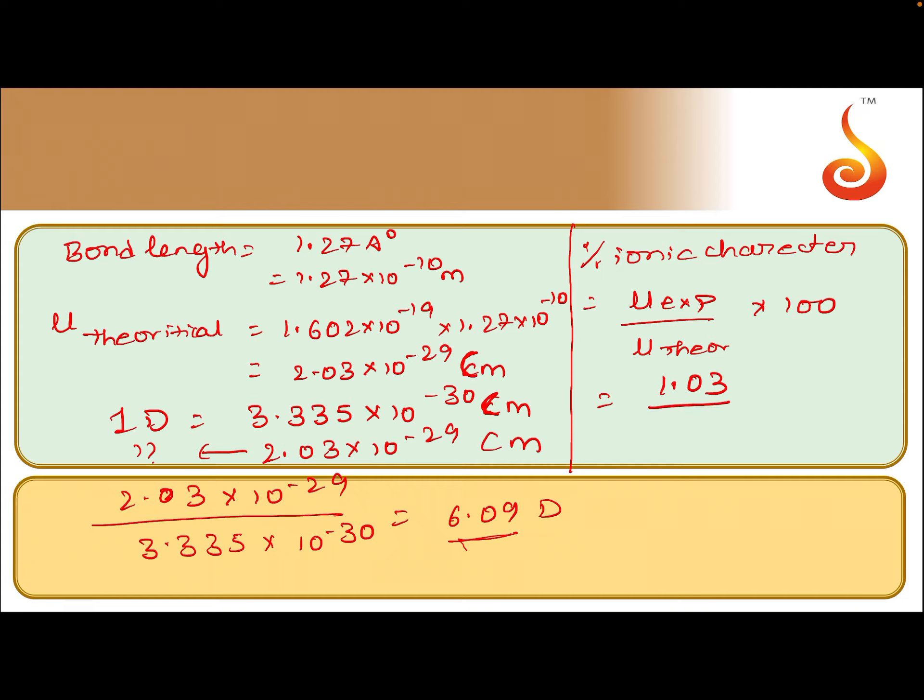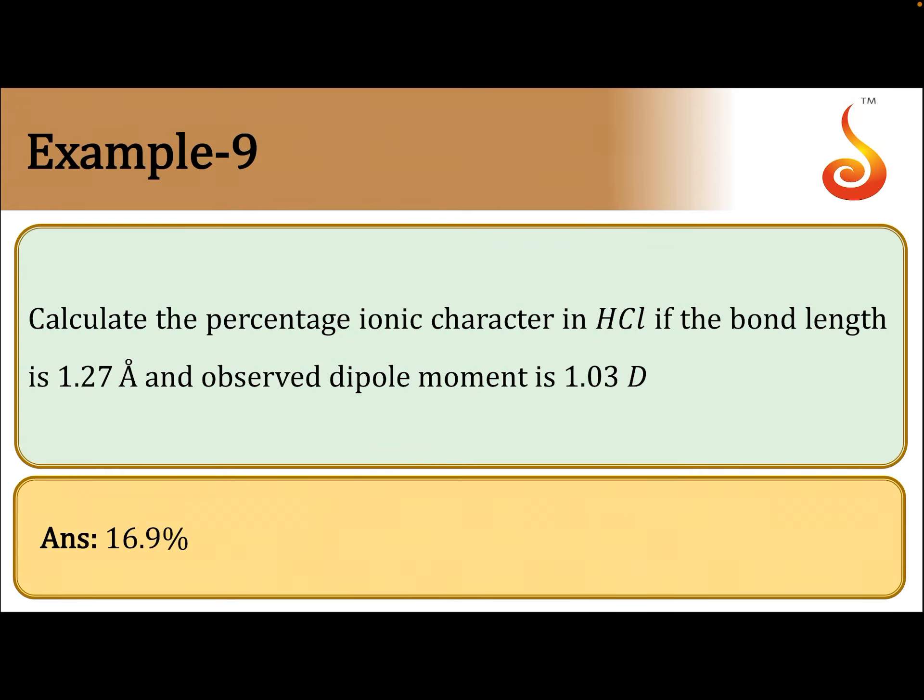Percentage ionic character is mu experimental by mu theoretical into 100. That is 16.9 percent. That should be your answer, 16.9 percent.